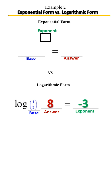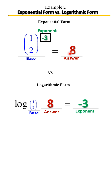Here we're given the log form and we want to rewrite it in exponential form. What is our base? Our base is 1 half. And what's our exponent? Negative 3. So 1 half raised to the negative 3 equals — what's our answer? 8. So 1 half raised to the negative 3 equals 8. To say it in log form: log base 1 half of 8 equals negative 3.